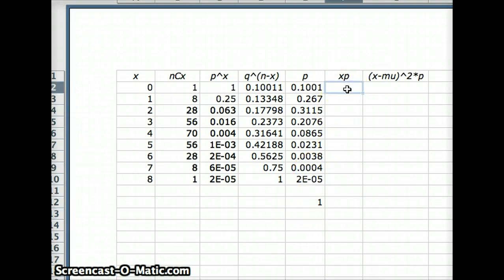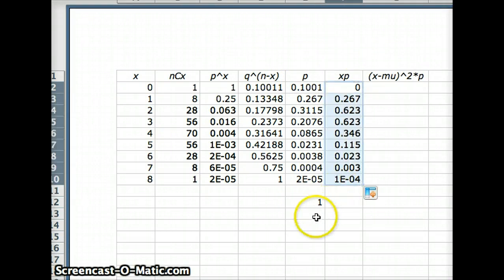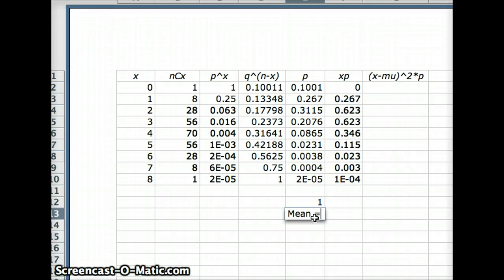Now to get the mean, we need the sum of xp. So we're going to take the x column times the p column. We're going to autofill all those. And the mean should equal the sum of xp. So it's going to equal the sum of all those. We've got a mean of 2, but that shouldn't surprise us. We have 8 candies. The probability of a candy being green is 0.25. So in a sense, a quarter of them are green on average. So 2 seems reasonable.